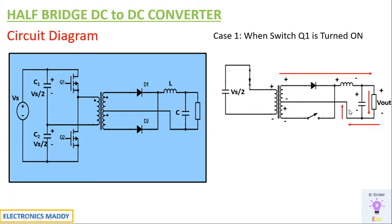There will always be a return path for the circuit current. If there is no return path, that will be regarded as an open circuit. Since one diode is already open circuit, current cannot return through that path — it will return through the other path. So this is the loop in which the current flows.